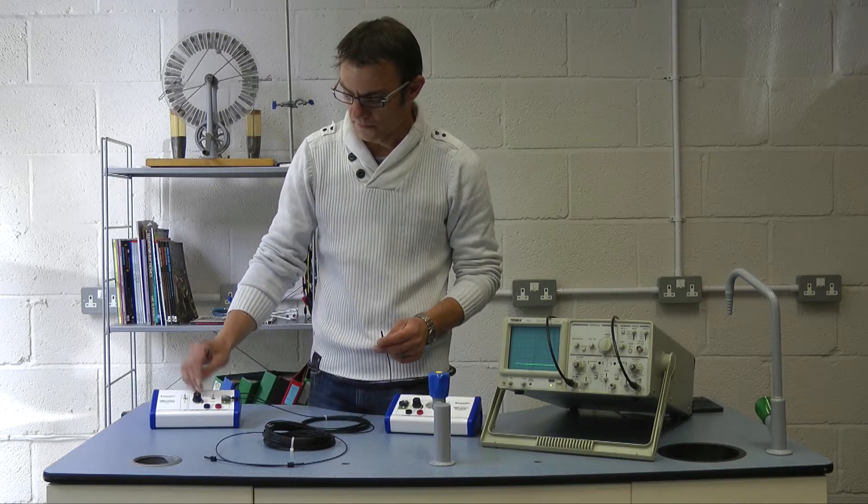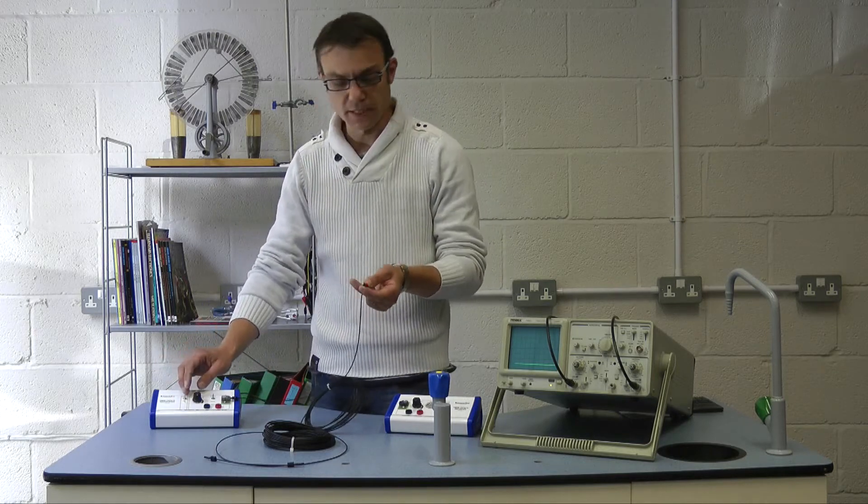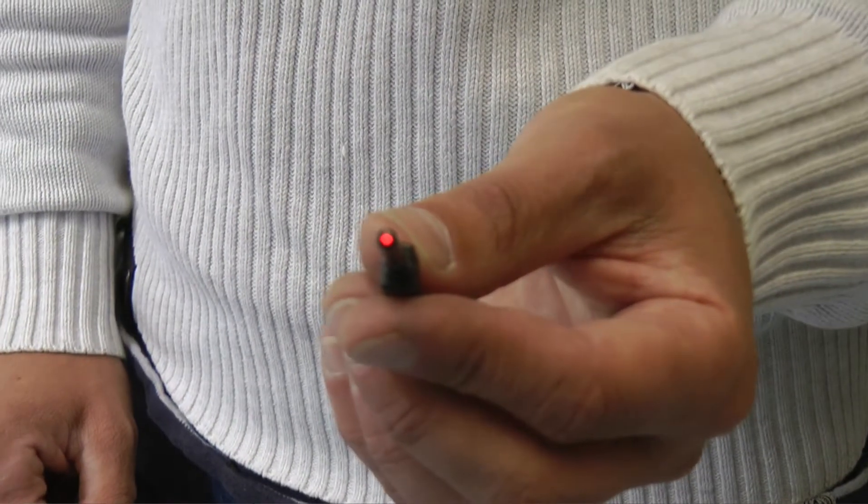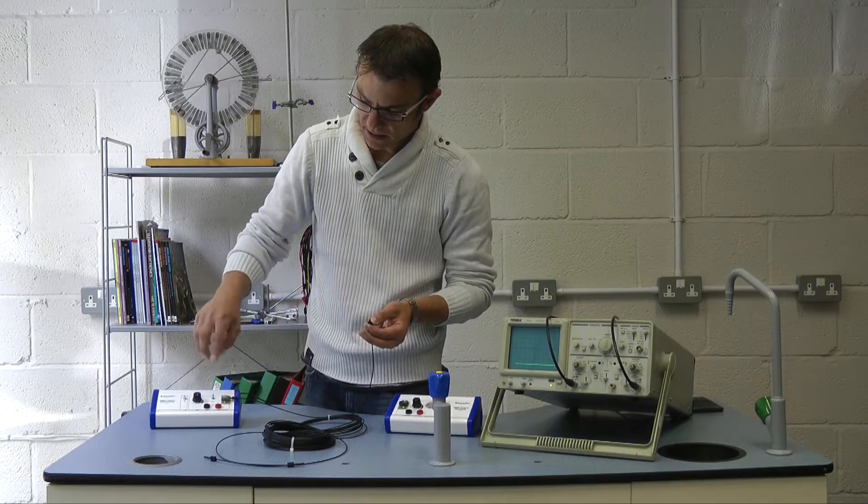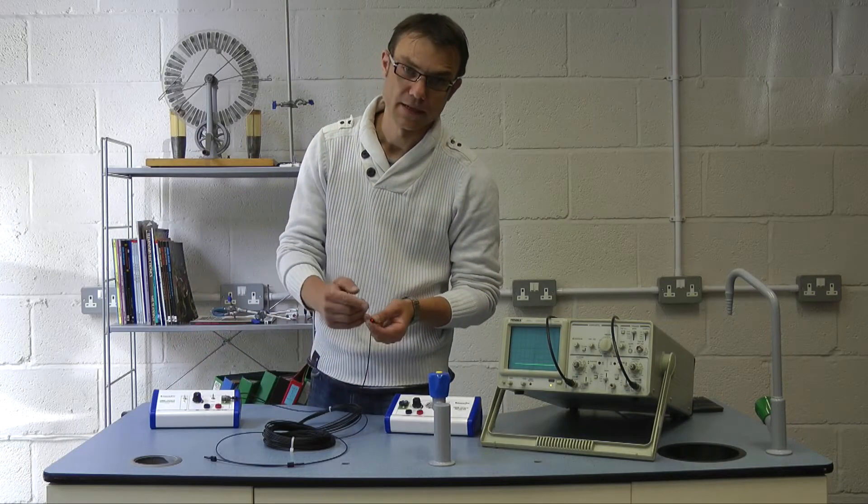And if we switch this on, you can see quite clearly there, the red light at the end of the fiber is being produced by the transmitter and is traveling down the cable.